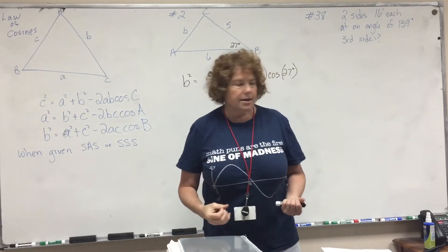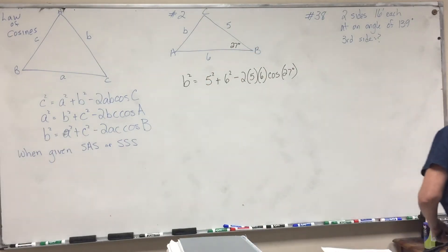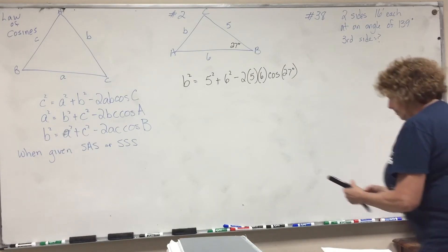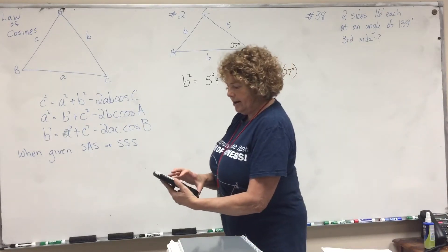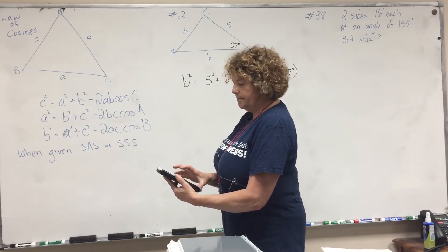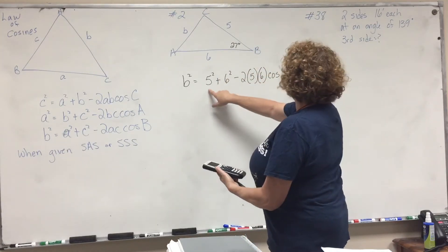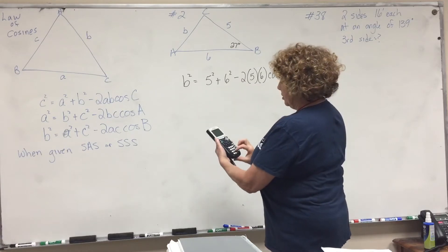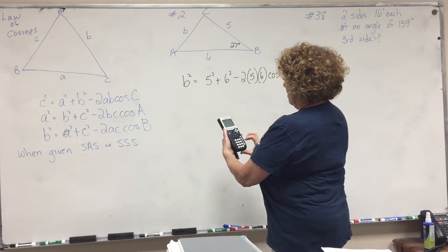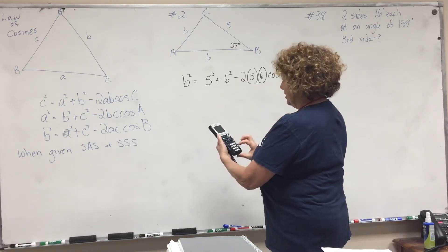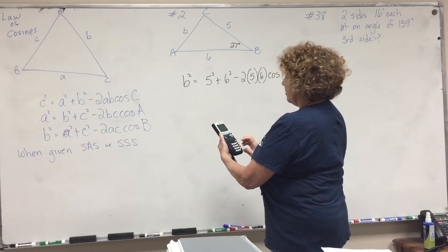All right? Then you just grab your calculator. Make sure, once again, that you are on degrees. And so we can just punch this in. We can just say 25 minus... six squared is 36. Or not minus, sorry.